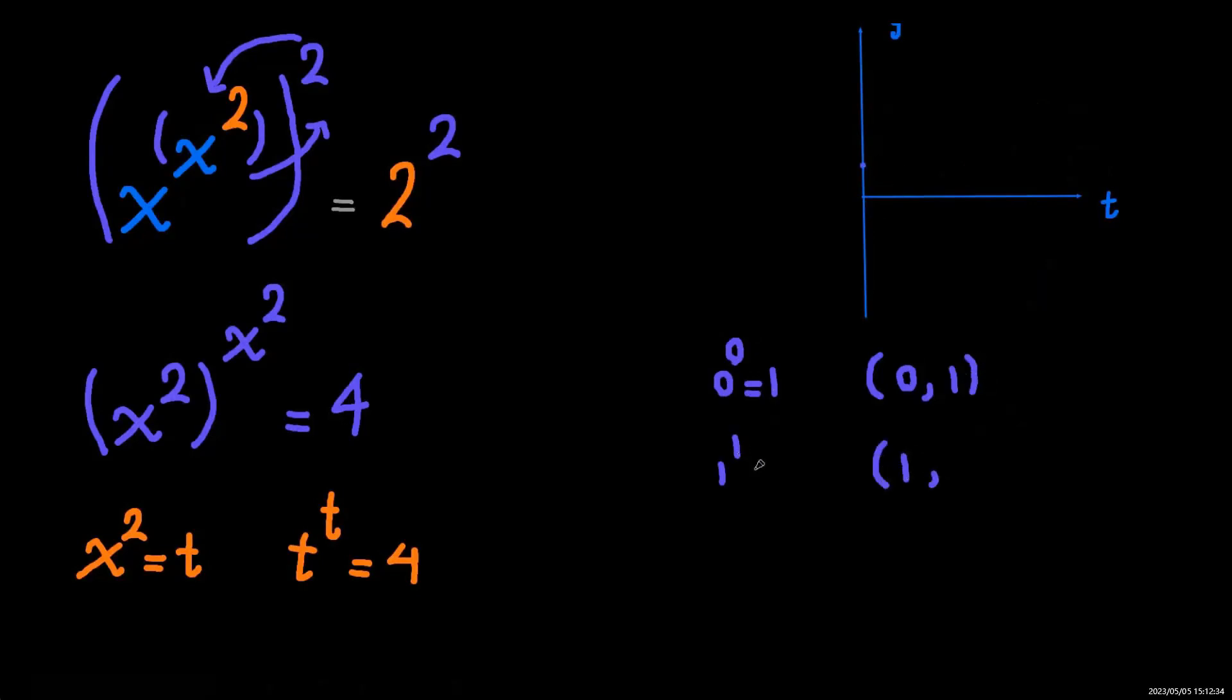The first point is zero and one, then one and one, and two and two.